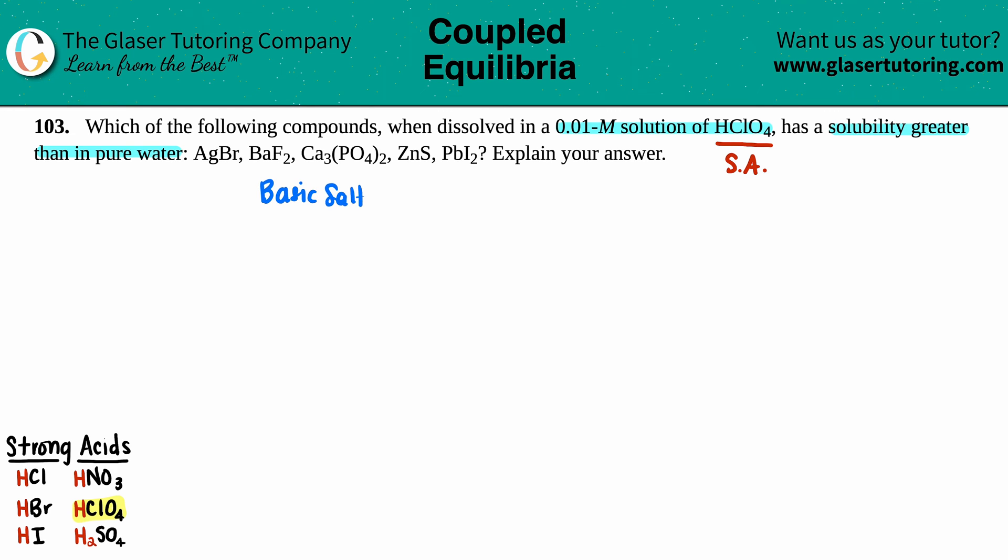And remember, a salt is just a fancy way of saying an ionic compound. So all five of these have positives and negatives. We just have to find out which one of these is the basic one.